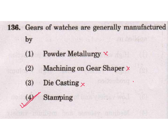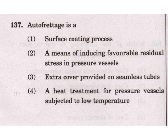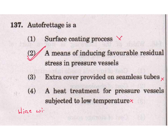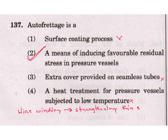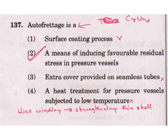Autofrettage is a means of inducing favorable residual stress in pressure vessels — it is not a surface coating process, not an extra cover on seamless tubes, and not a heat treatment for low temperature. Option 2 is the answer. Wire winding is similar to autofrettage — wire winding is also done for strengthening. Autofrettage is used for thick cylinders, pre-stressing the cylinders.